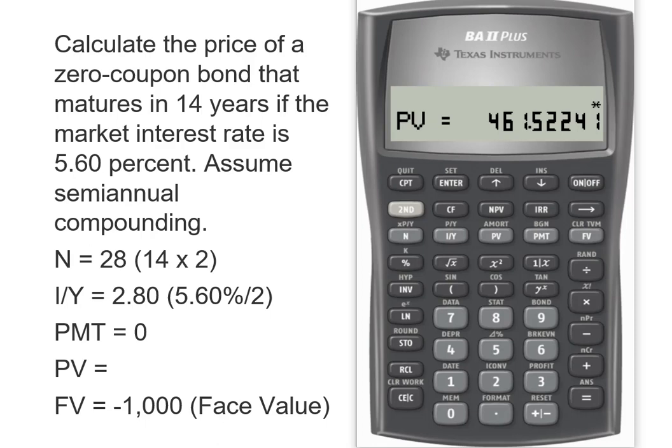So what that tells me is that a 14-year zero-coupon bond with a market interest rate of 5.6% is going to sell today, or the price of that bond is going to be $461.52. I wasn't here long, but I hope it helped.